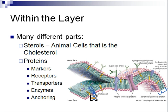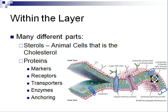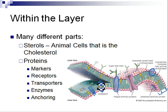And then there are a bunch of different types of proteins. There are going to be marker proteins, receptor proteins, transporting proteins, enzymes, and anchoring proteins. The proteins can be integral, which means they go all the way through the cell membrane, or they can be peripheral, which is just part way through the cell membrane. These yellow portions represent the cholesterols. Most of the time, the proteins are going to be these big purple blobs going through, and the cholesterol are the little yellow hexagons — those are going to be the lipids.